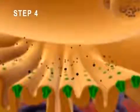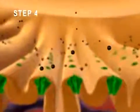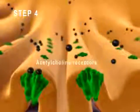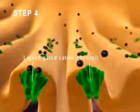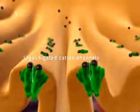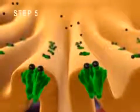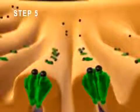Step 4: Acetylcholine diffuses across the synaptic cleft and binds to acetylcholine receptors which contain ligand-gated cation channels. Step 5: These ligand-gated cation channels open.